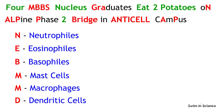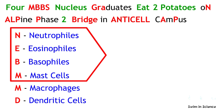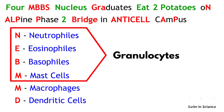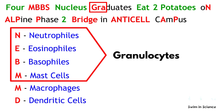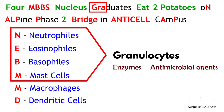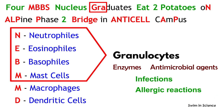Another characteristic is that these four cells are also called granulocytes, which is represented by the term 'graduates' for easy remembrance. These granulocytes have specific granules containing enzymes and antimicrobial agents that are released during infections, allergic reactions, and asthma.